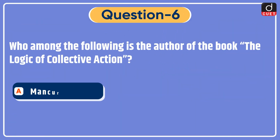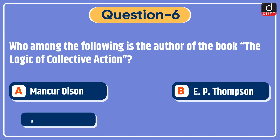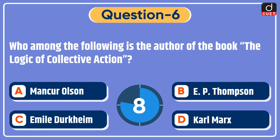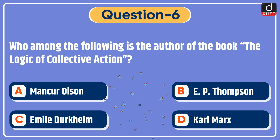Next question: who among the following is the author of the book 'The Logic of Collective Action'? Mancur Olsen, E.P. Thompson, Emile Durkheim, or Karl Marx? The correct answer is option A, Mancur Olsen.